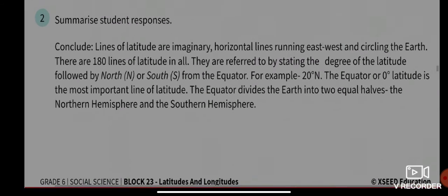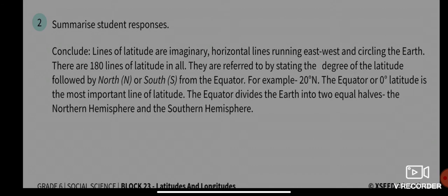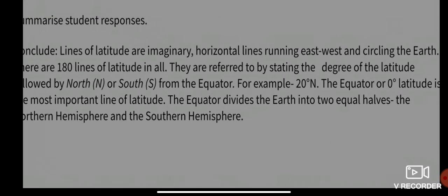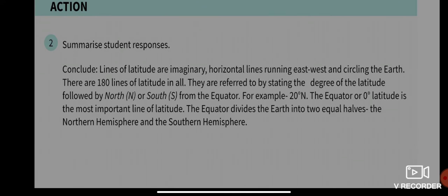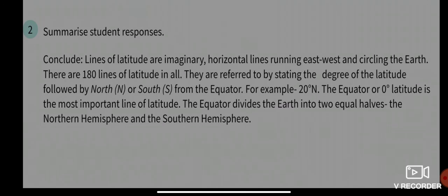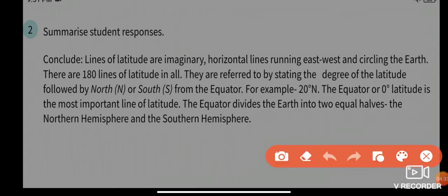Lines of latitude are imaginary horizontal lines running east–west and circling the earth. There are 180 lines of latitude in all. They are referred to by stating the degree of latitude followed by either north (N) or south (S) from the equator — for example, 20 degrees north.